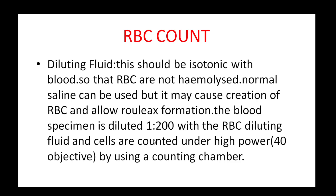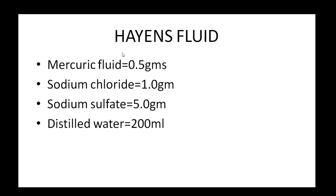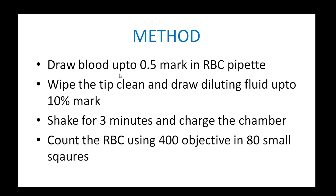For RBC counting, blood samples are taken. We use RBC diluting fluid. The composition of RBC diluting fluid includes: NaCl 1 gram, Sodium Sulfate 5 grams, in 200 ml. For the counting method, an RBC pipette is used. Fill the diluting fluid to the 10% mark, then fill to the required level, and pour the solution into the chamber.